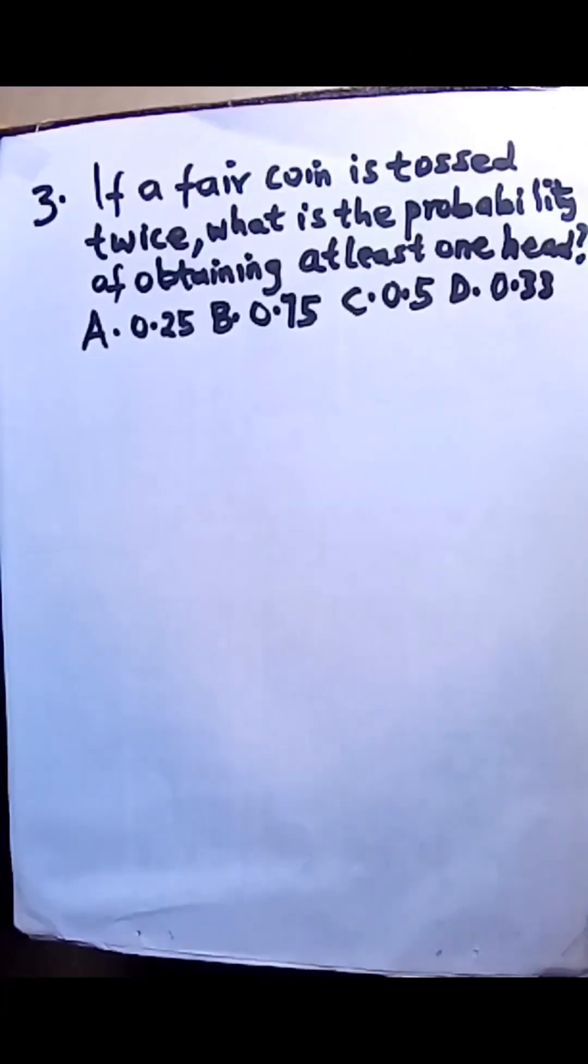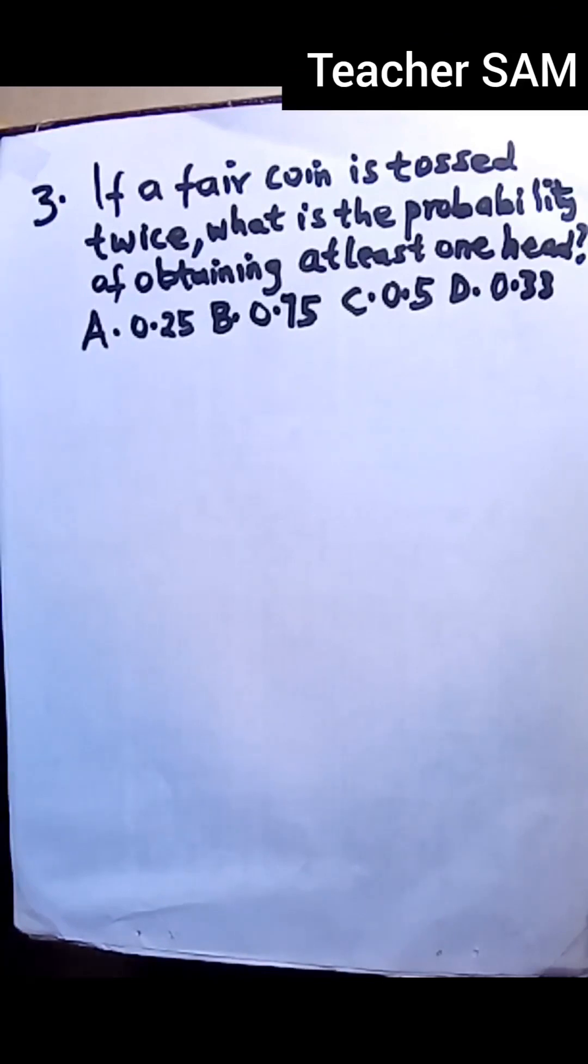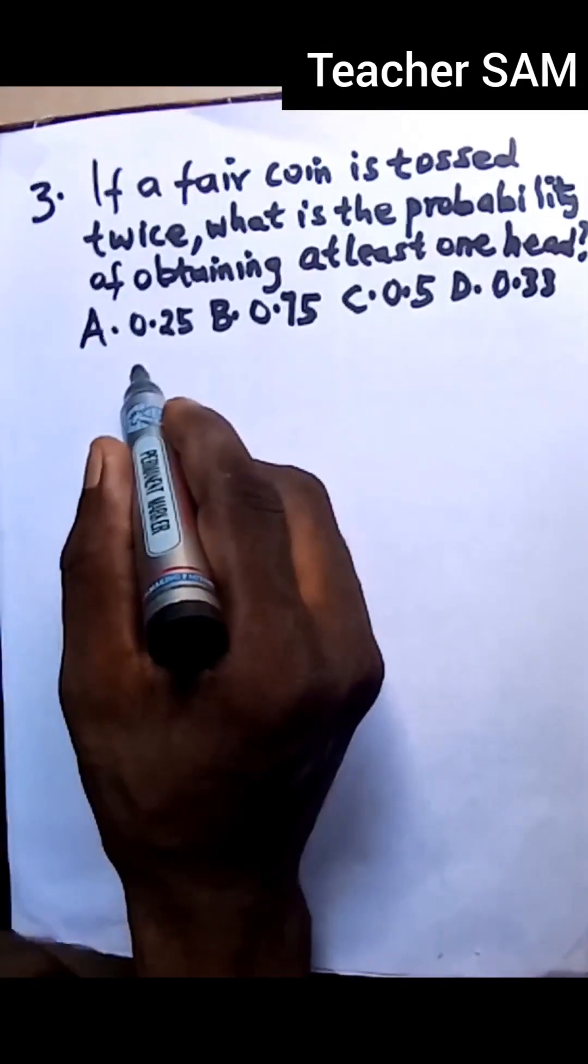Okay, we have another question before us. Question three: If a fair coin is tossed twice, what is the probability of obtaining at least one head? We have some options: option A, 0.25; option B, 0.75; option C, 0.5; and option D, 0.33. So let's get down to business solution quickly.